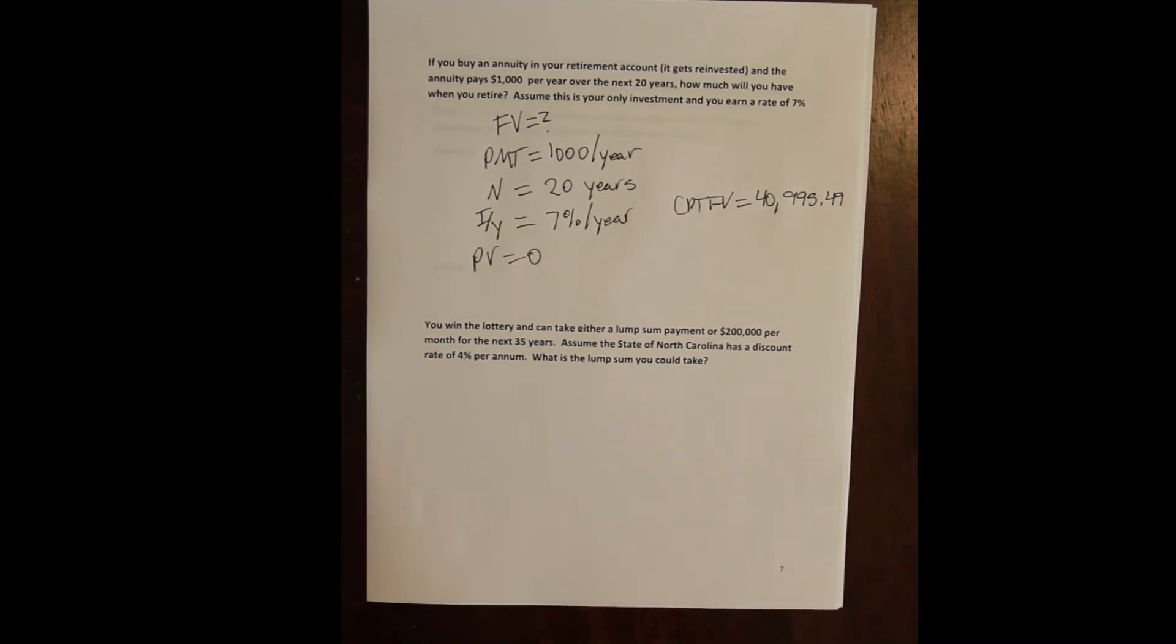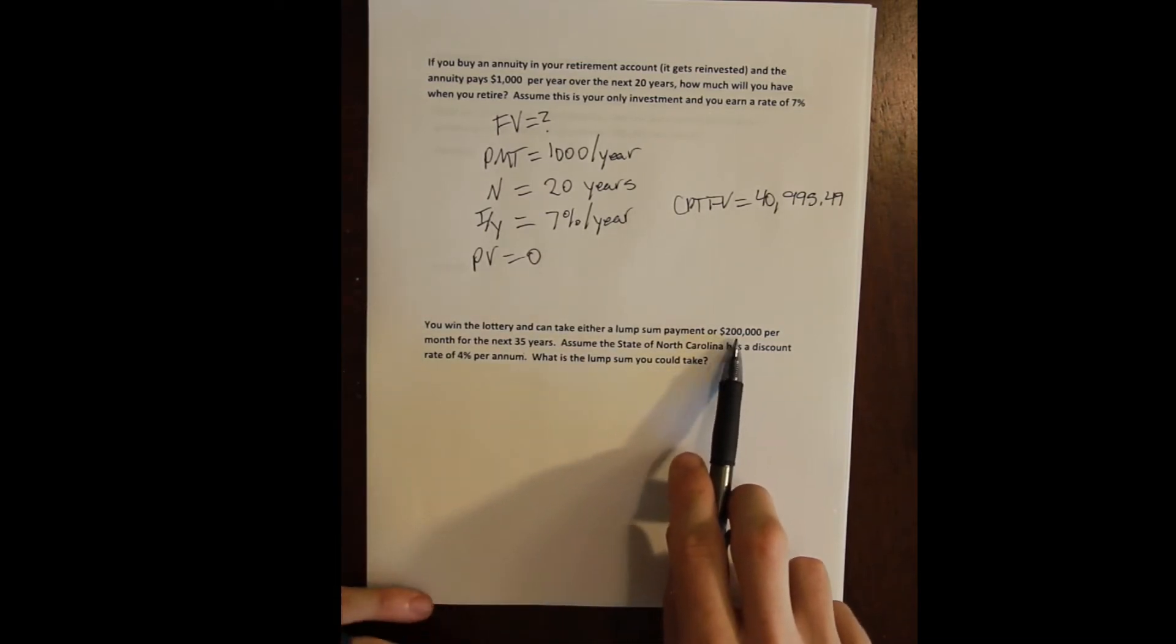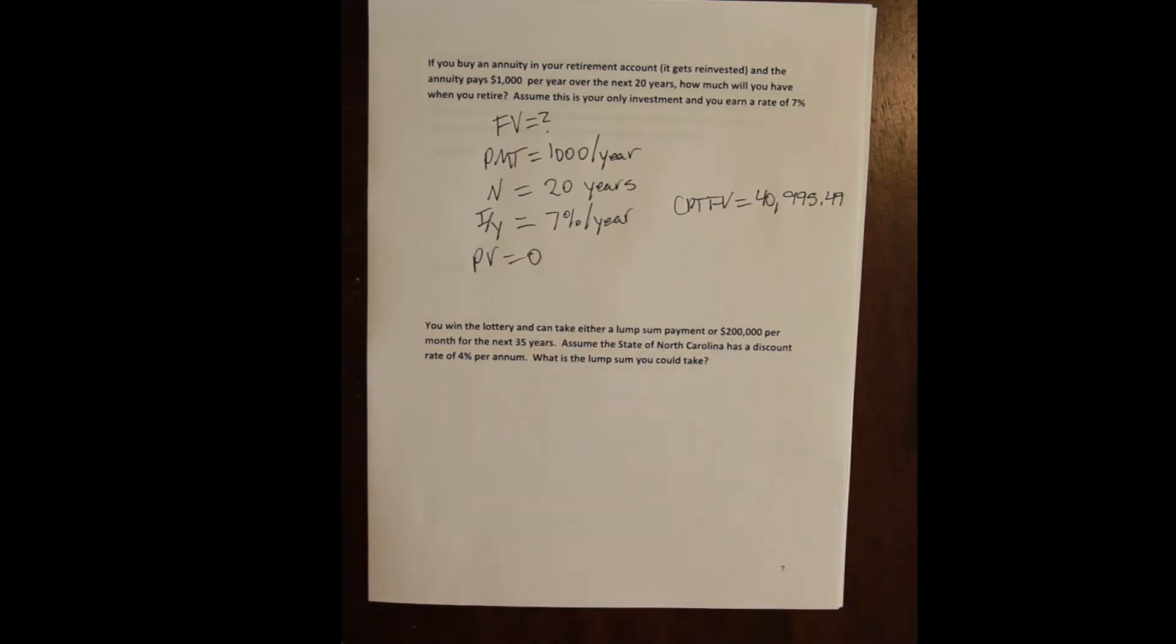So that's your choice. You're never going to win what that giant number on the billboard says. You drive by the billboard and it says Powerball 200 million, you're never going to win 200 million. What you are going to win is an annuity that will pay you out a total of 200 million.